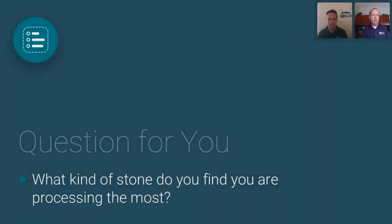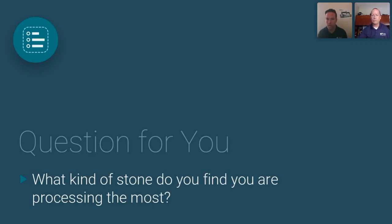We're starting off with a polling question: what kind of stone do you find you are processing the most? Options include granite, porcelain, tile, marble, quartz, or another material such as Dekton or some type of exotic material. Someone has already voted for quartz — go ahead and interact with us and let us know what kind of stone you're looking to process.